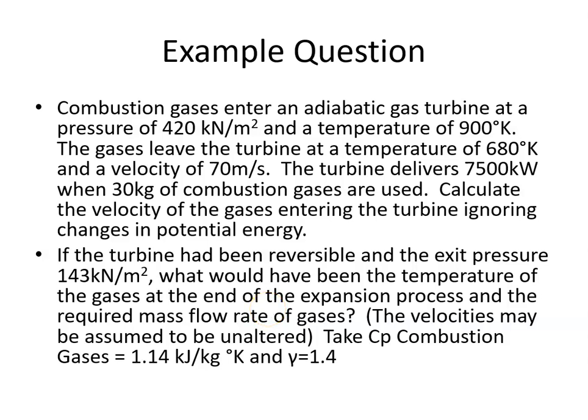Combustion gases enter an adiabatic gas turbine at a pressure of 420 kN/m² and a temperature of 900 degrees Kelvin. The gases leave the turbine at a temperature of 680 K and a velocity of 70 m per second.